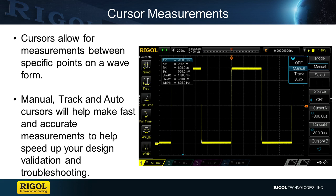There are three cursor modes available. The first mode is Manual. Manual cursors will allow you to position cursors anywhere along the waveform to make measurements.